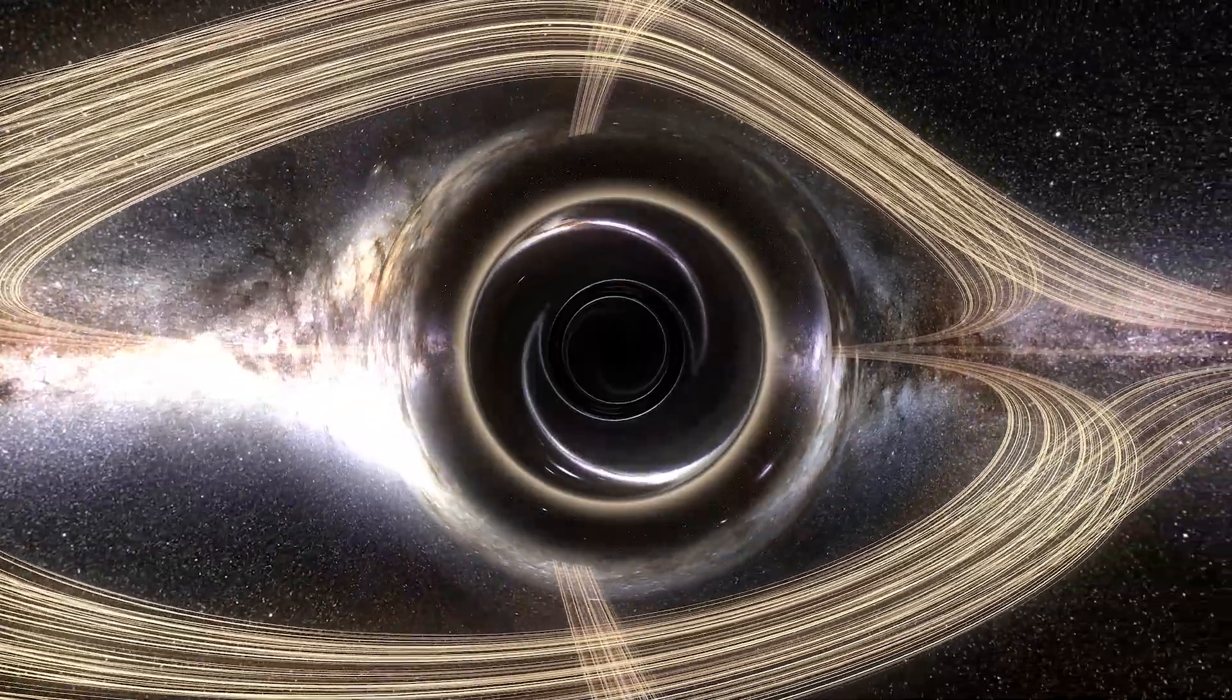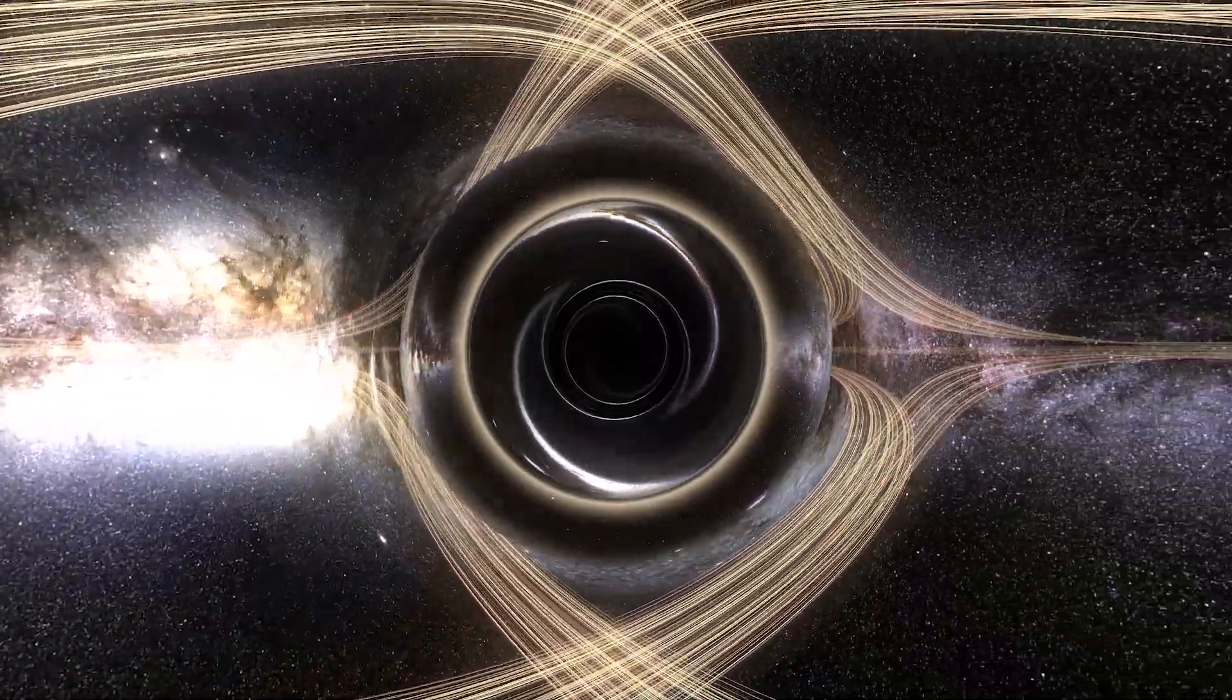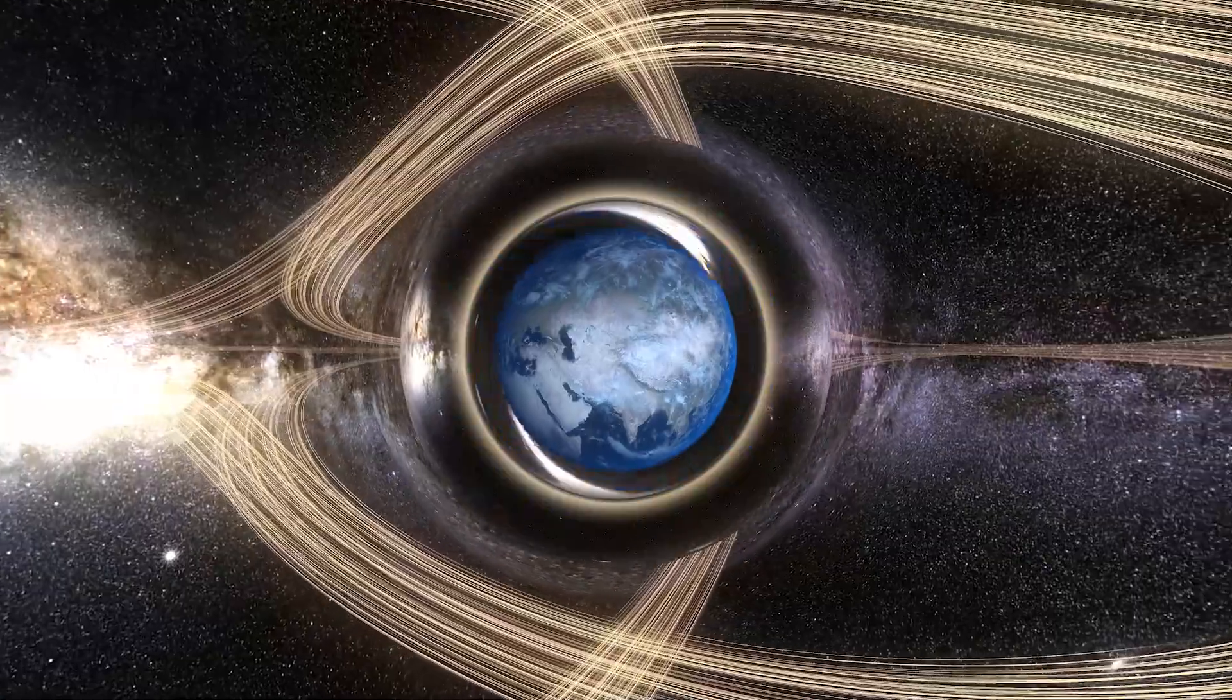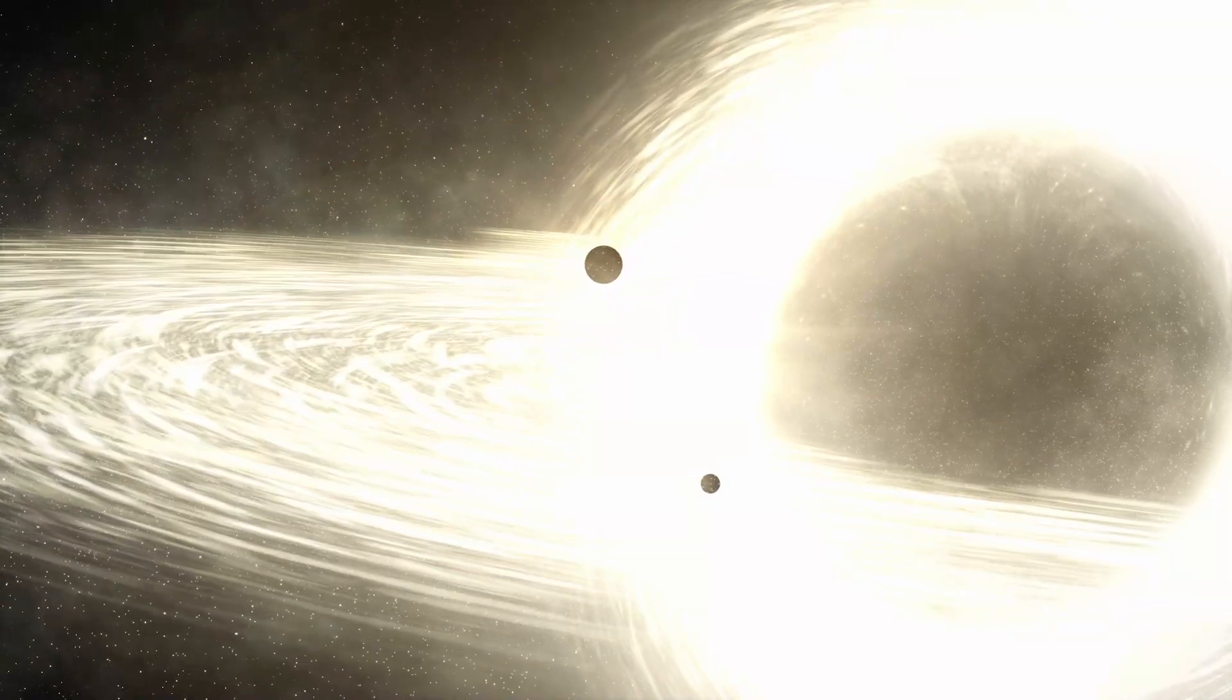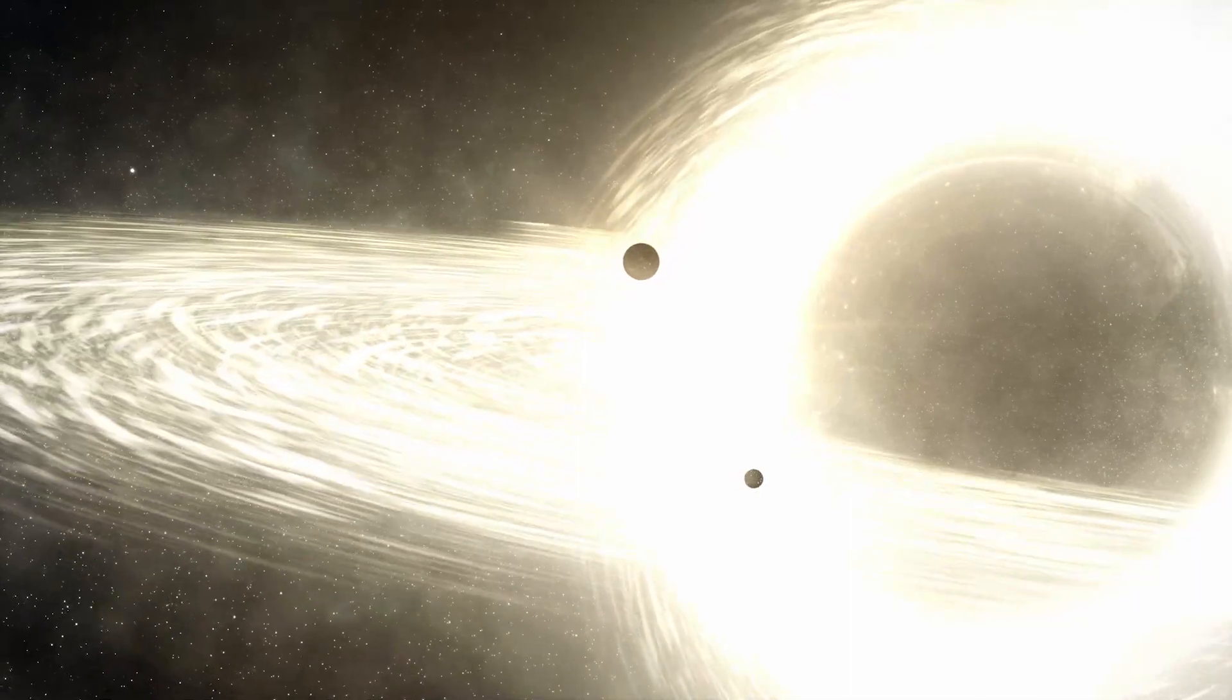A supermassive black hole's size goes to billions of miles, which means our Earth will be like a speck in comparison to it. There is at least one supermassive black hole in every galaxy.